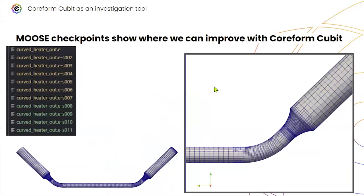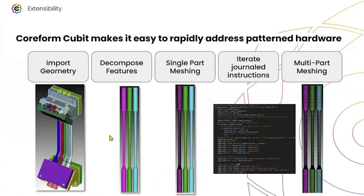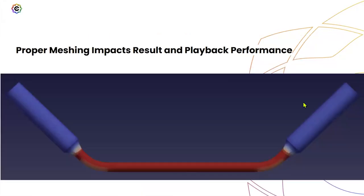If I didn't fully understand electromagnetism or how heat works through one of these heaters and didn't know where to put the nodes, I can start the program with the auto-mesher, let it create one or two meshes, and see — okay, this corner is thermally or electrically interesting. It may then be faster for me to remove nodes in less-interesting places and add more nodes there, rather than waiting for the auto-mesher. Once you do that, it's the same process: import the geometry, decompose the features, mesh a single part, iterate on the journal instructions, and do it for all remaining parts in the assembly.